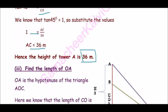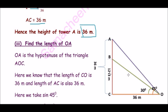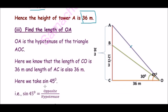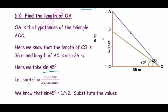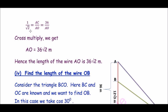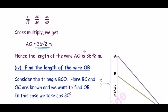Now, next question: find the length of OA, that is the wire length. OA is the hypotenuse of the triangle AOC. Here we know that the length of CO is 36 meters and the length of AC is also 36 meters. Here we take sine 45 degrees. Sine 45 degrees equals opposite side by hypotenuse. We know that sine 45 degrees equals 1 by root 2. So substitute these values: 1 by root 2 equals 36 by OA. Cross multiply, we get OA equals 36 root 2 meters. Hence, the length of the wire AO is 36 root 2 meters.